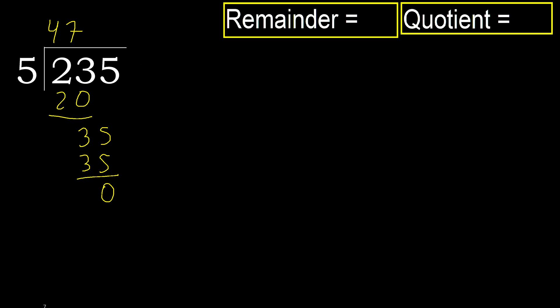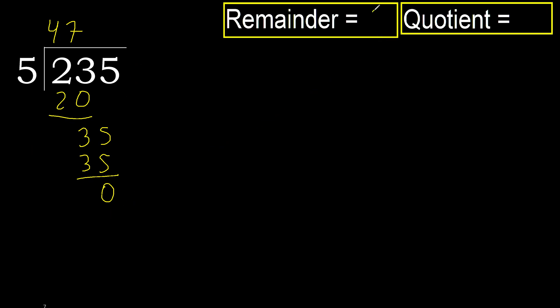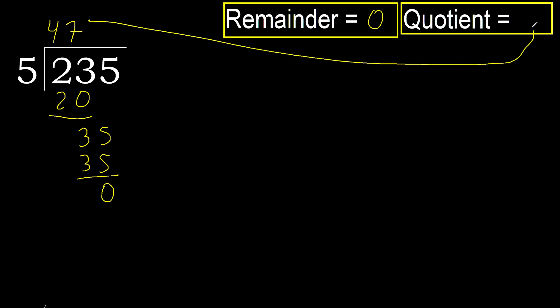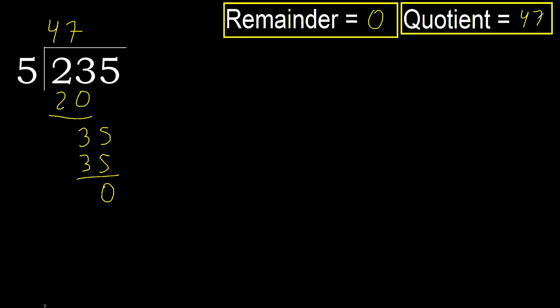There is no next number, therefore finish. 235 divided by 5 equals 47. Next problem: 235 divided by 7.